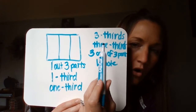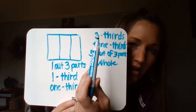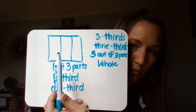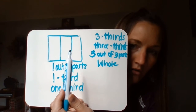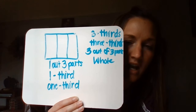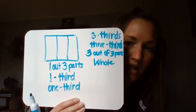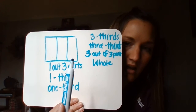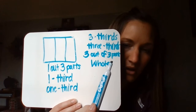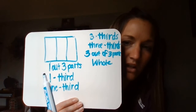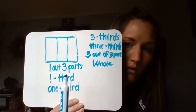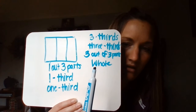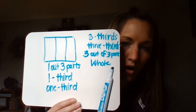So if I'm naming all shares, there's three thirds, because we have one, two, three thirds. And then we could also say that we have three out of three parts, because we're using all parts. Or we could say a whole.